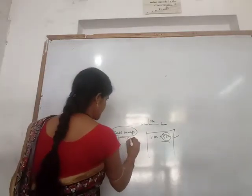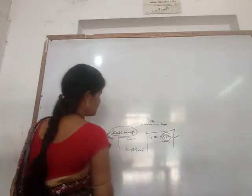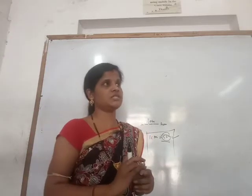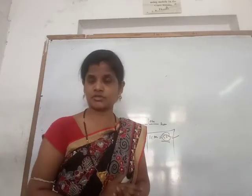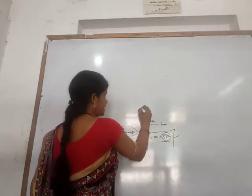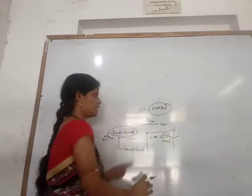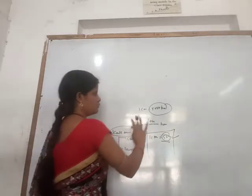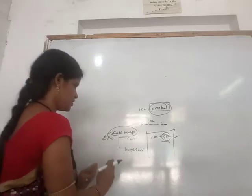The scale map is of two types: small scale map and large scale map. A small scale map is used when the distance is very large, such as 10,000 km. We use a small scale to represent huge areas. Small scale maps are used to represent large areas like countries and continents.